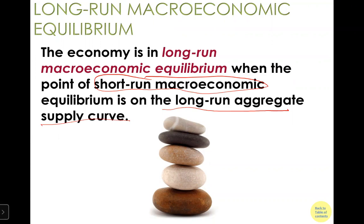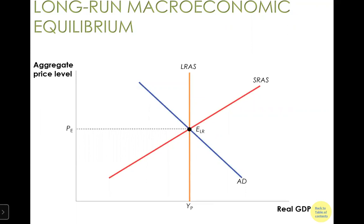The long-run macroeconomic equilibrium is an equilibrium on top of another equilibrium. We need the short-run macroeconomic equilibrium to coincide with the long-run aggregate supply curve. We look at the short-run aggregate supply crossing aggregate demand to enter short-run equilibrium, and we require this short-run equilibrium to coincide with long-run aggregate supply.